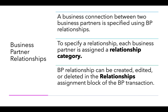Business partner relationships represent a connection between two business partners and are specified using the BP relationship customizing in SAP CRM. To specify a relationship, each business partner is assigned a relationship category. BP relationships can be created, edited, or deleted in the relationships assignment block of the BP transaction code within the SAP GUI.